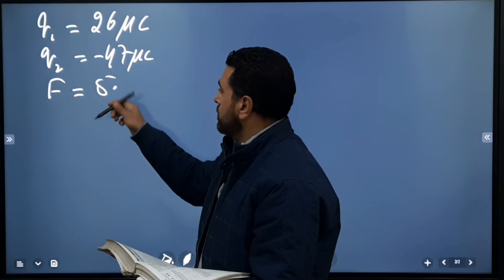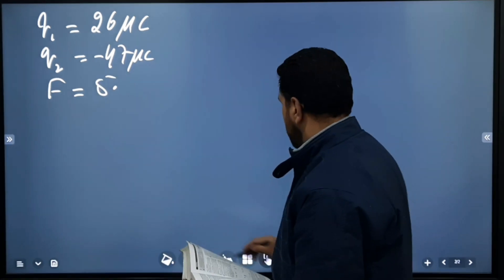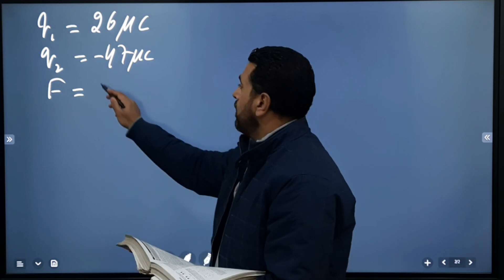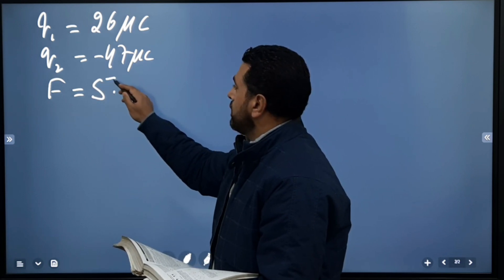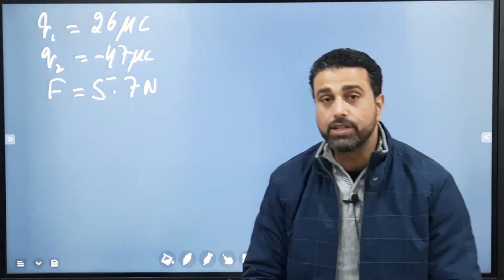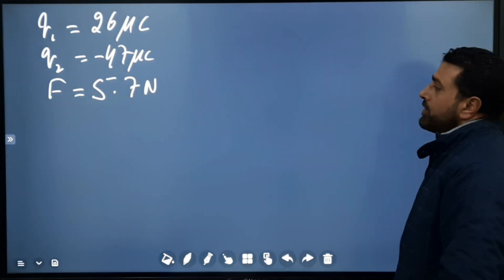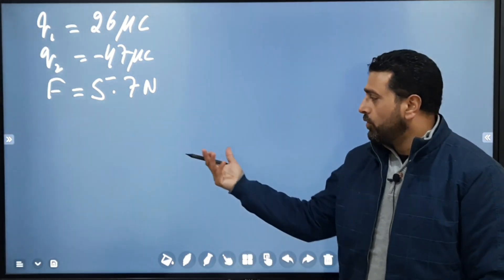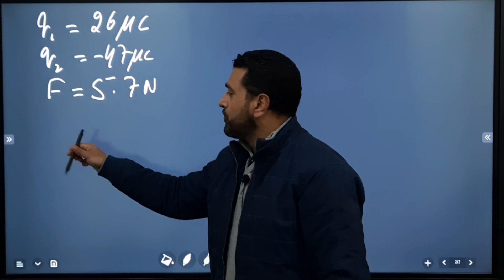We have to find the distance between them. It's very simple, simple application of Coulomb's Law. We already know the equation: Coulomb's force is equal to gamma q1 q2 divided by r².